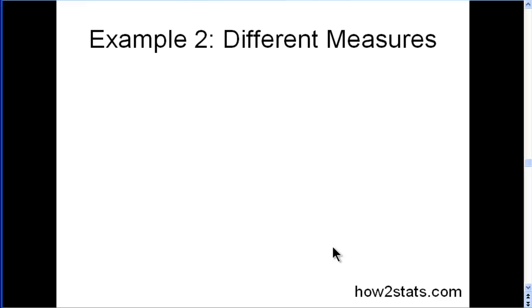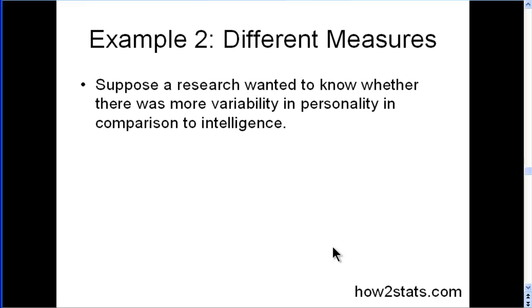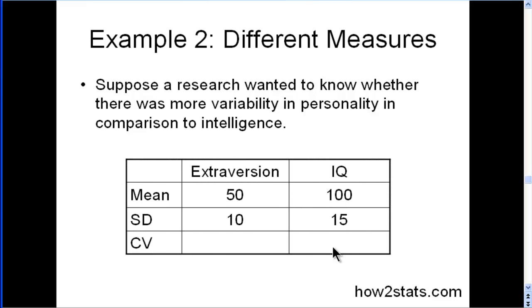Here's another example based on different measures. Suppose a researcher wanted to know whether there was more variability in personality in comparison to intelligence. So, here we have a measure of extraversion. The mean is 50, and a standard deviation of 10.